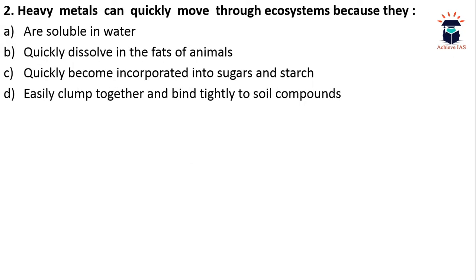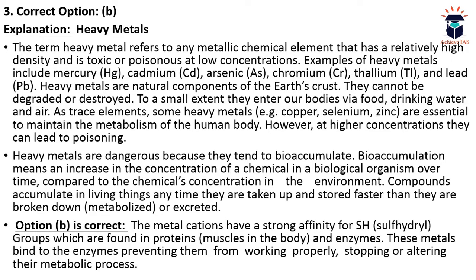The next question is: heavy metals can quickly move through ecosystems because — A) they are soluble in water; B) they quickly dissolve in fats of animals; C) they quickly become incorporated into sugars and starch; D) they easily clump together and bind tightly to soil compounds. The answer is B — they quickly dissolve in fats of animals.